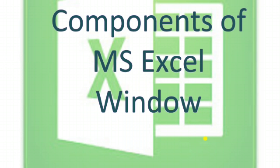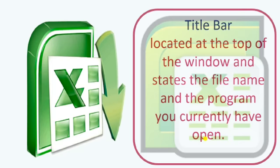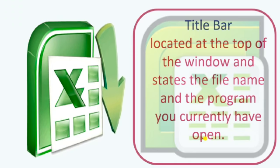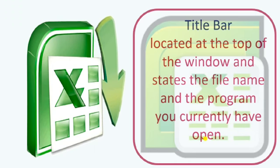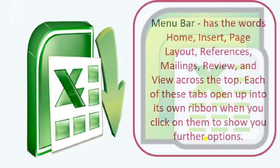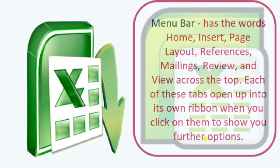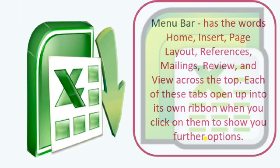Now we will study the components of the MS Excel window. First is the Title Bar — it is located at the top of the window and gives you the file name of the program on which you are currently working. Second is the Menu Bar — it has the words Home, Insert, Page Layout, References, Mailings, Review, and View across the top, below the title bar. All these tabs are present in that row, and each tab opens into its own ribbon when clicked, showing further options and commands.